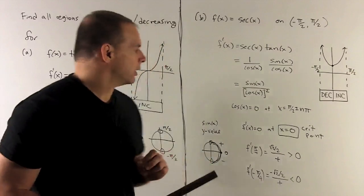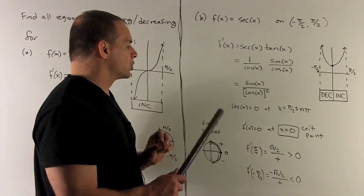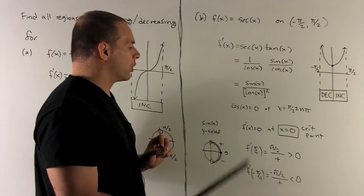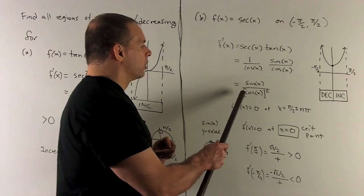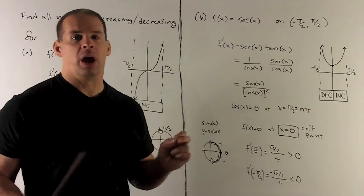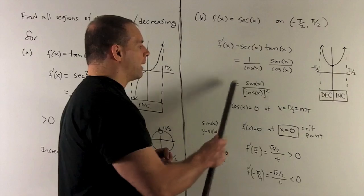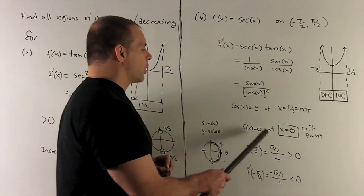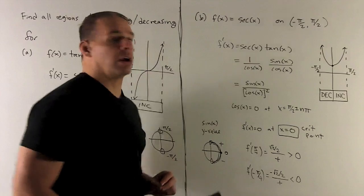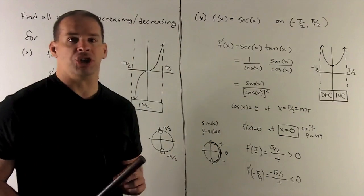At pi-fourths, I'm going to put that into sine. So the derivative is going to be square root of 2 over 2 over some positive number. Note, I don't really need to worry about what cosine is at pi-fourths. We know it. But for purposes of computing, plus or minus, I don't care about the bottom. That's always going to give me a positive number. So I'm going to have square root of 2 over 2 over a positive number that's positive. So we're going to be increasing in that region.